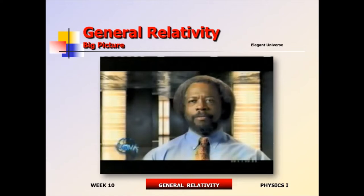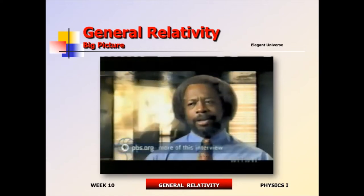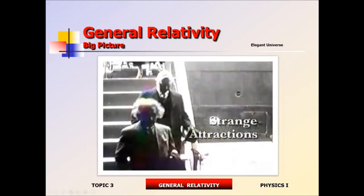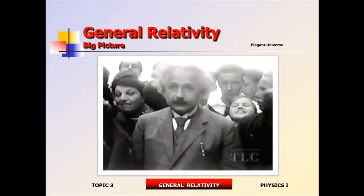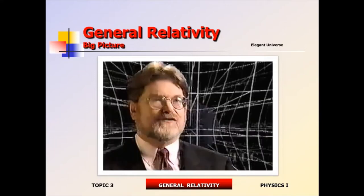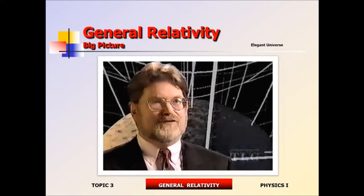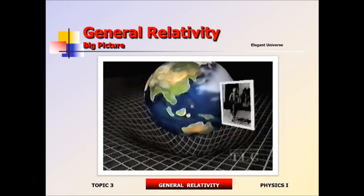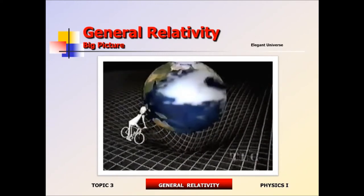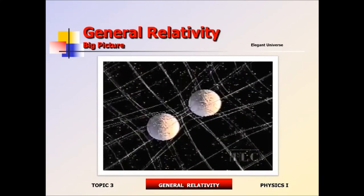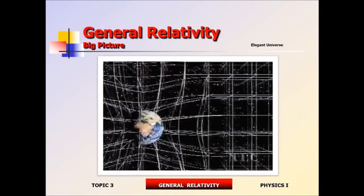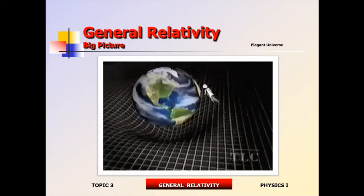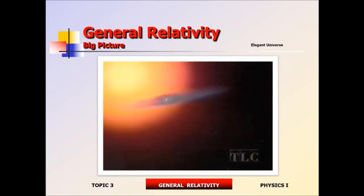Einstein called this new picture of gravity general relativity, and within a few years he became a household name — a rock star of science. From Einstein we know that gravity is not a kind of magnetism; gravity is a property of matter and space. Matter bends space — the more mass, the more the surrounding space is warped. That's why the moon orbits the Earth: it's trapped in a gravity pit created by the Earth's mass.